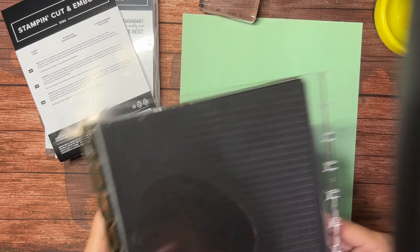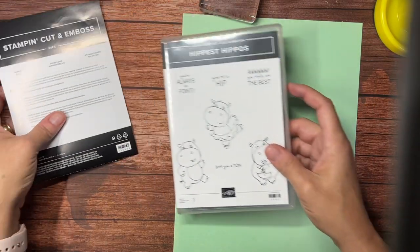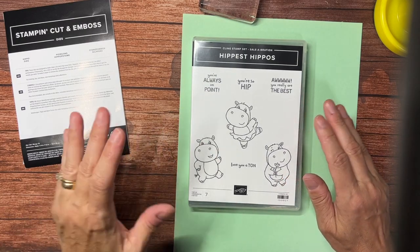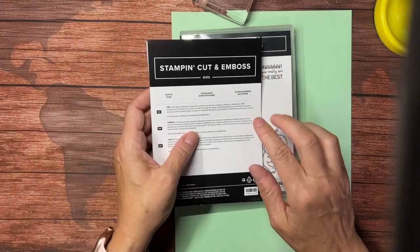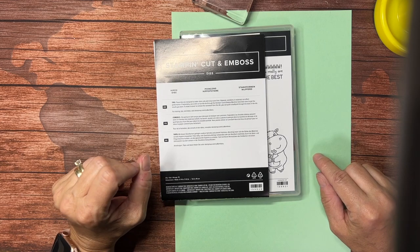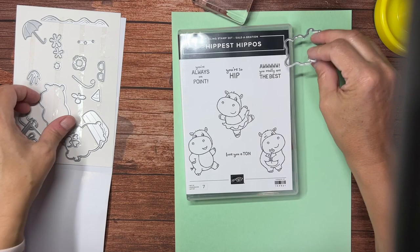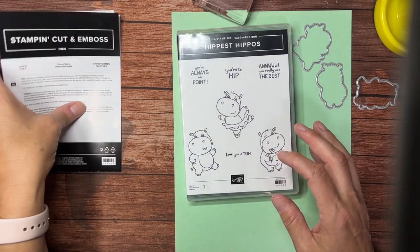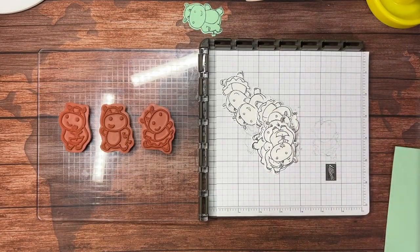Let me put the Stamparatus out of the way for just a moment. The Hippest Hippos is a celebration set currently for just a couple more weeks, and it comes with—well, it doesn't come with it, but there is also a celebration selection hippo dies that coordinates with it. In those dies there are three hippo images that coordinate with these three stamped hippos.